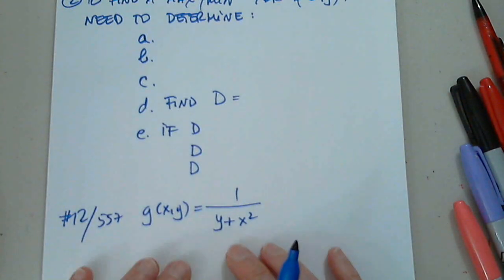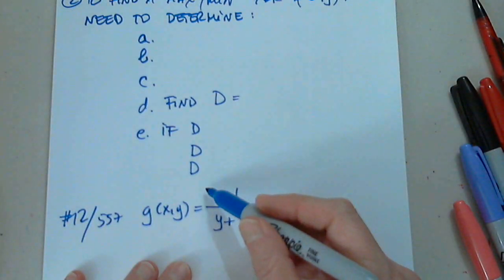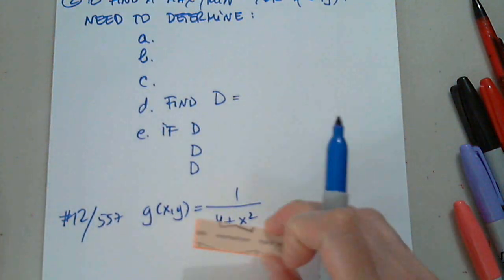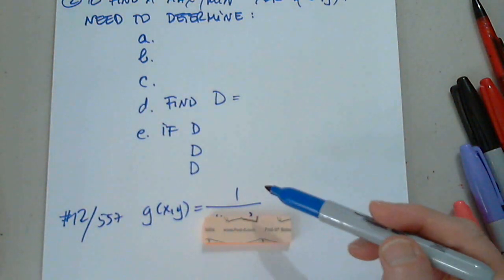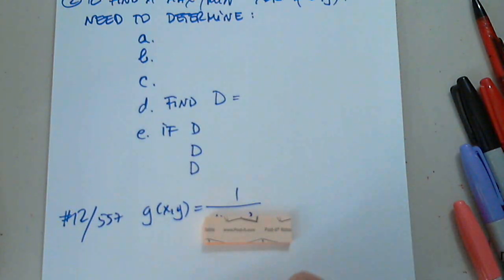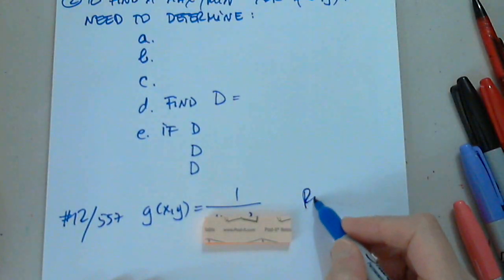Let's define the domain of this function. So what type of function is it? What type is it? Is it quadratic? Is it linear? Is it radical? It's a rational function.